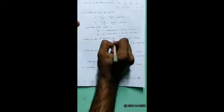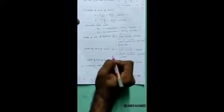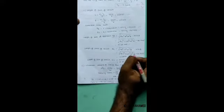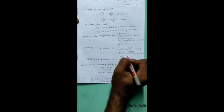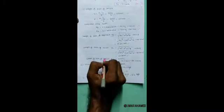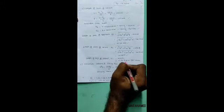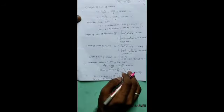Length of path of approach K_P uses formula square root of (R_A squared minus R squared cos squared phi) minus R sin phi. Length of path of recess uses the same formula but different R_A. Path of contact is the sum of these values.